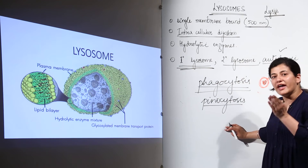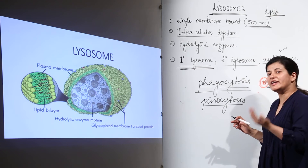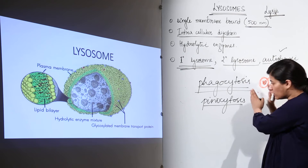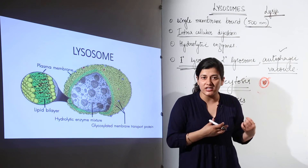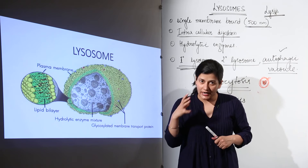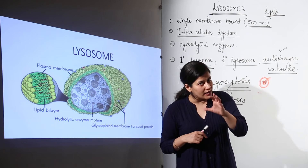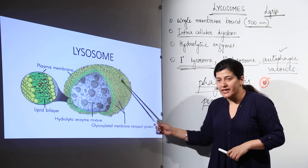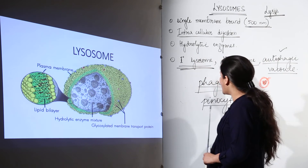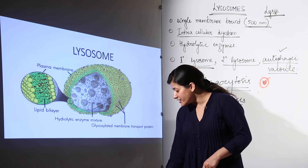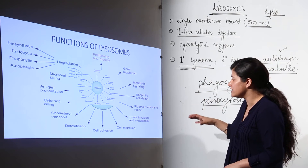Water and food particles come inside the cell by the process of endocytosis and exocytosis, as studied in plasma membrane functions. The food particle enters the cell; the lysosome comes in contact with the phagocytic or pinocytic vacuole, engulfs the particle, and because of the presence of enzymes undertakes digestion. If some part of the cell is getting older or is no longer required, the lysosome engulfs that cellular component and becomes an autophagic vacuole.